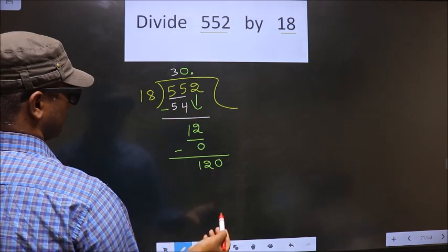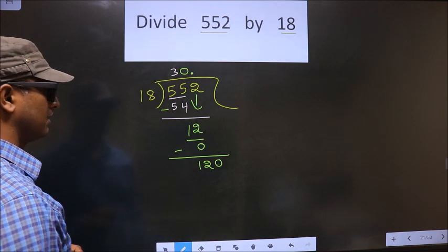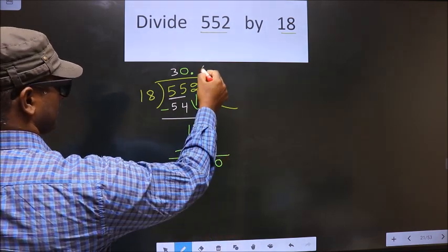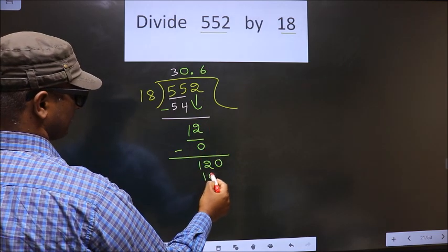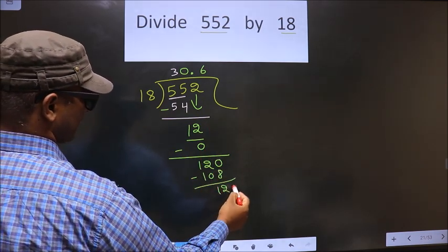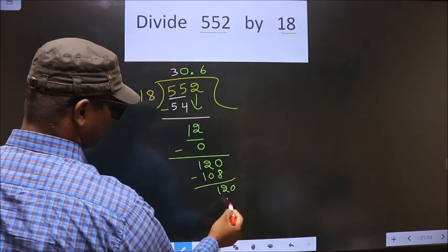Now here we have 120. A number close to 120 in 18 table. 18 times 5 is 90. 18 times 6 is 108. If I subtract, again I get 12. Again 0. 12. And it goes on.